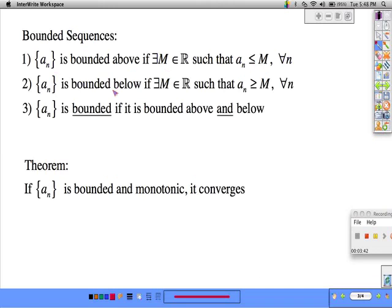It's bounded below if there exists an M in the real numbers, such that a sub n is always bigger than that value for all n. And we say that it's flat out bounded if it's bounded above and below. Key word being and.